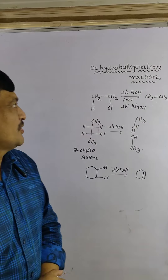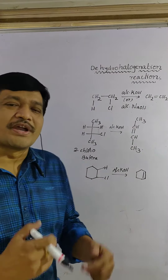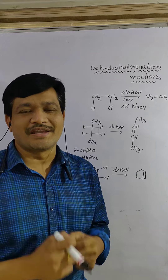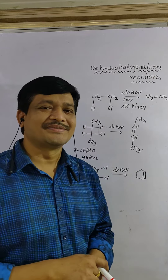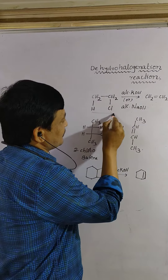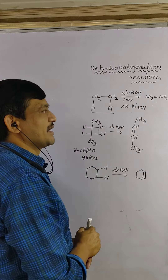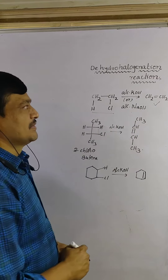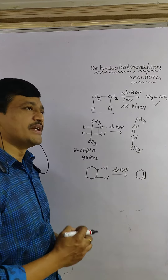Dehydrohalogenation reactions involve the removal of hydrogen and a halogen from a compound. For example, chloroethane reacts with alkali KOH or NaOH to give ethylene. Here, KOH or NaOH act as dehydrohalogenating agents.